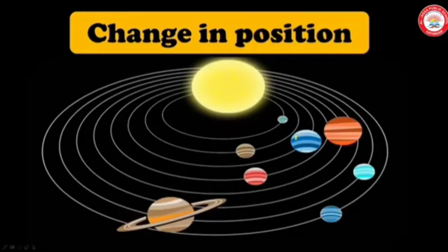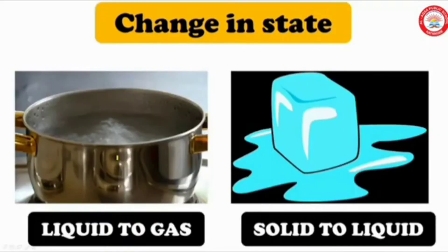Here we can see the movement of planets around the sun — that is, planets are changing their position. This is another example for change, that is change in state.